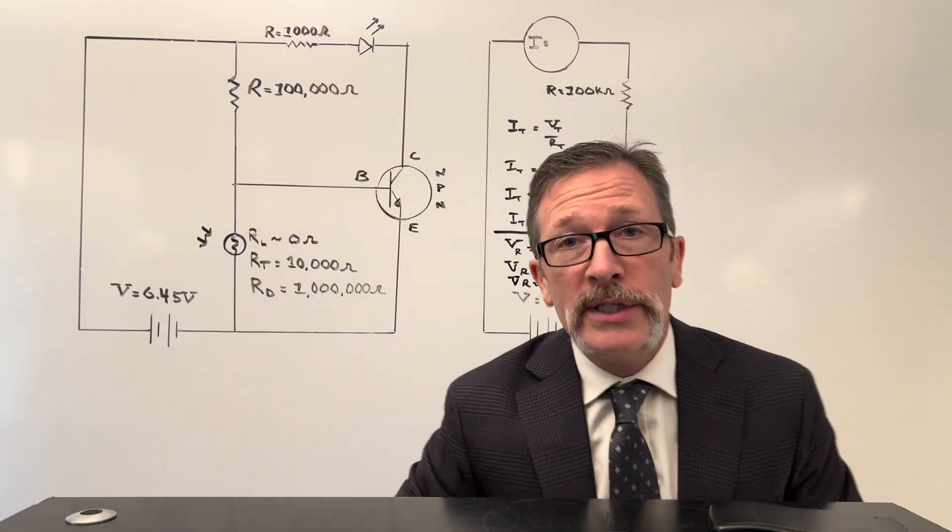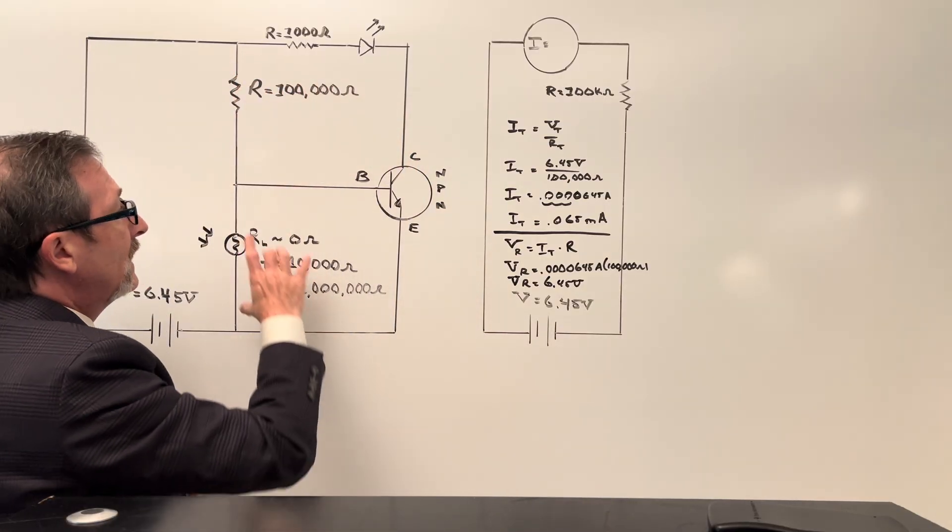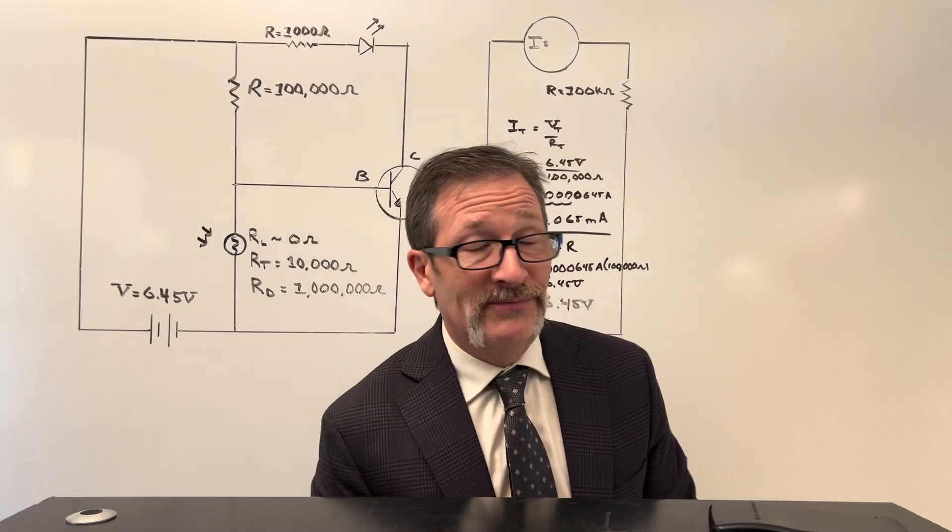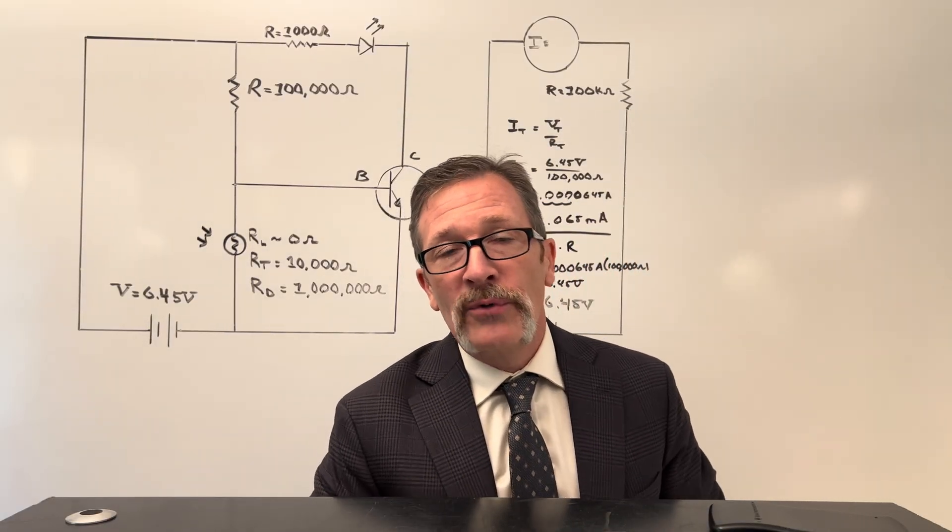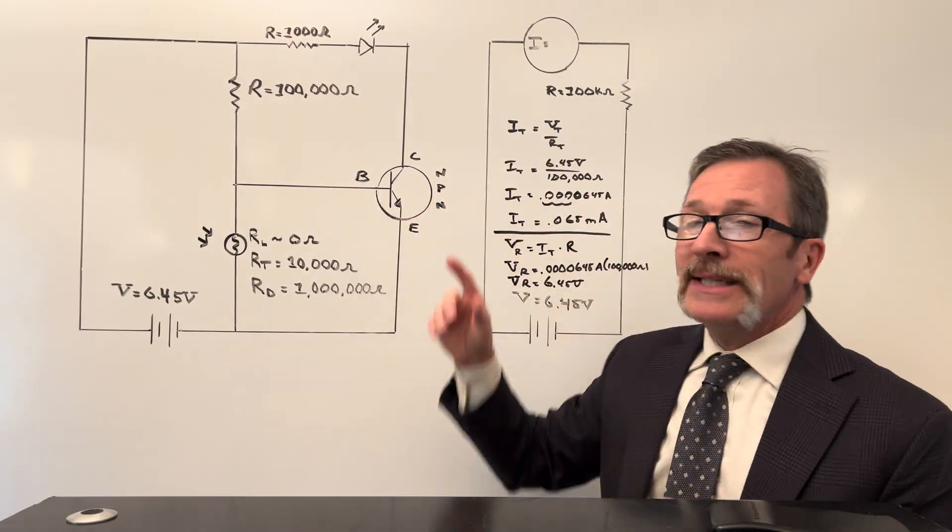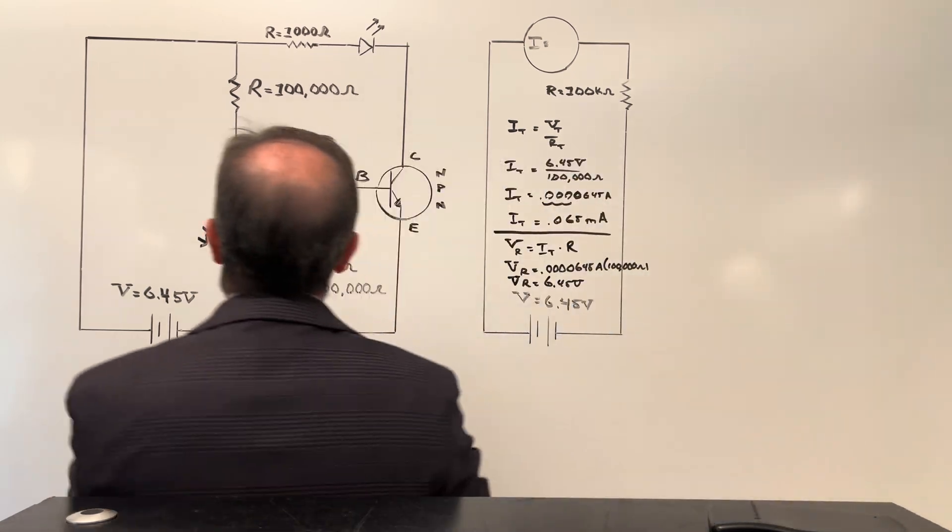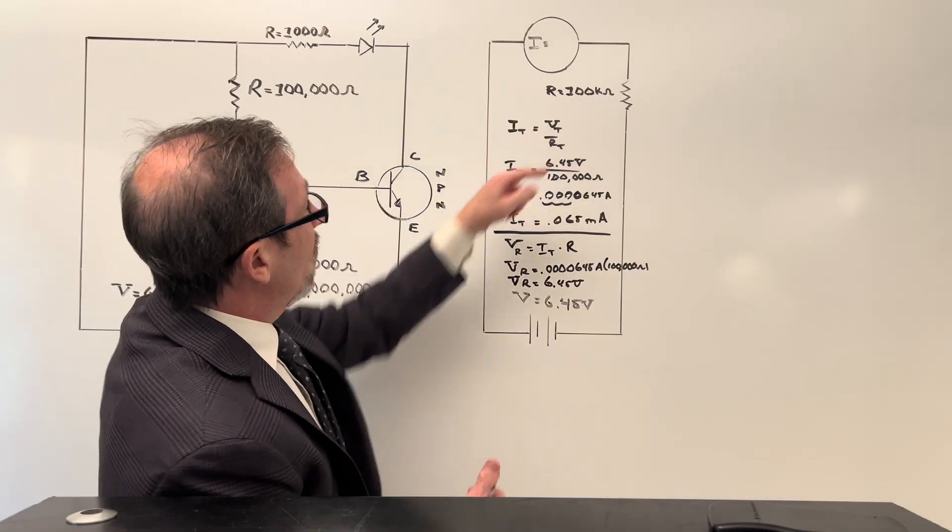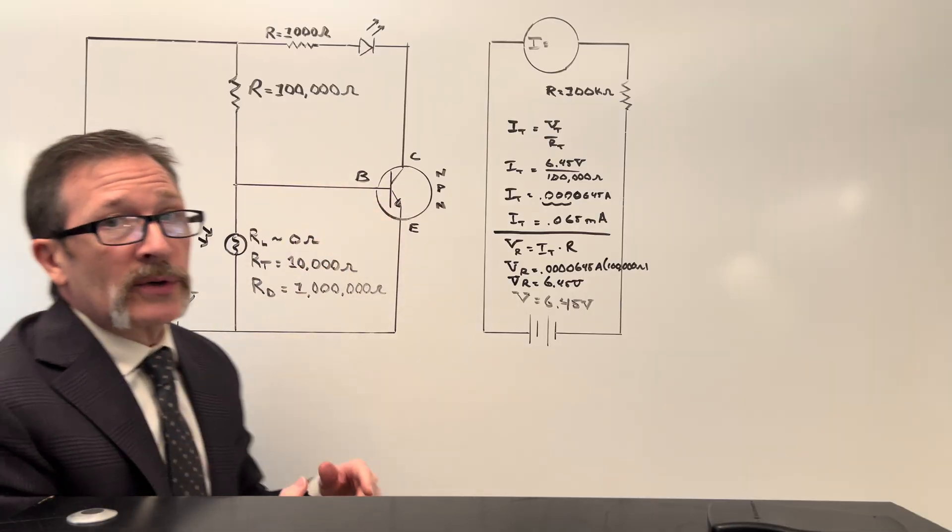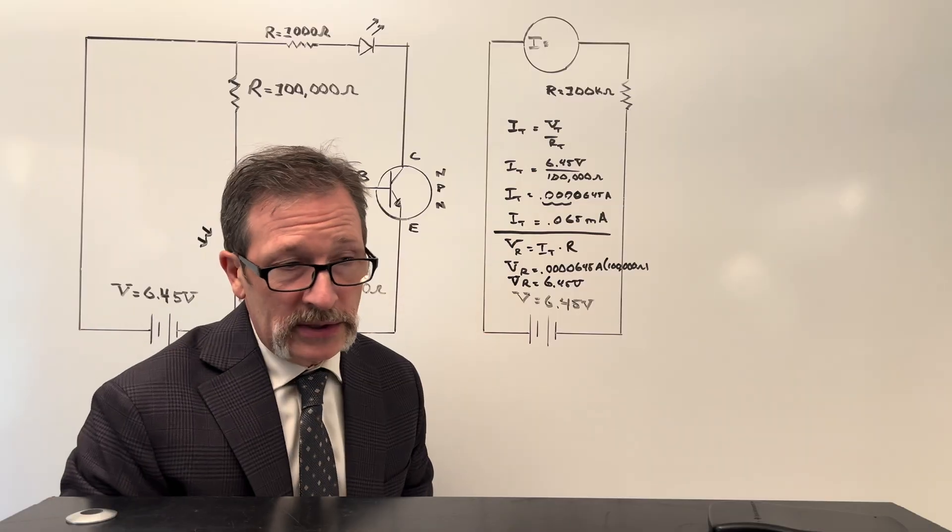So in other words, all of our voltage is across this resistor. So I've got 6.45 here, which means I have zero here. And if I don't have about 0.645 or 0.6 to 0.7 volts across my emitter and base, this is not going to allow anything to flow. So in this condition when the light is on, nothing is going to end up flowing through this outer loop because the transistor has not allowed current to flow yet.